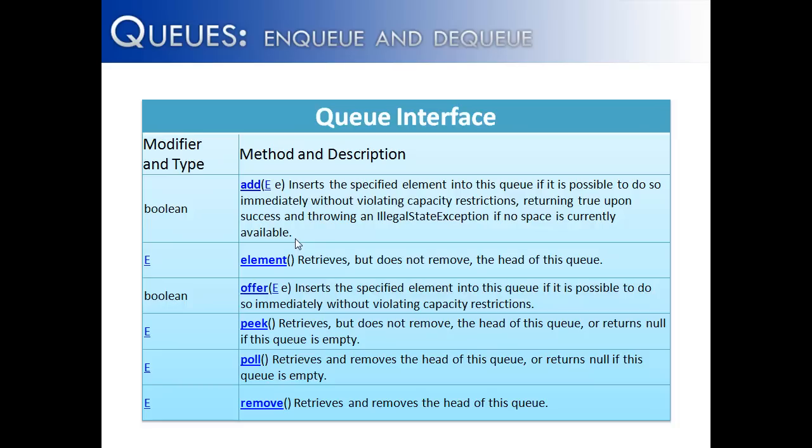But you can see why one add might be beneficial over offer, or offer might be beneficial over add. And it talks about violating capacity restrictions. You can set a queue to say, I only want this many elements inside of the queue. And if it goes over that,